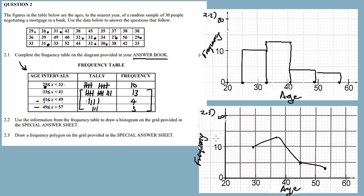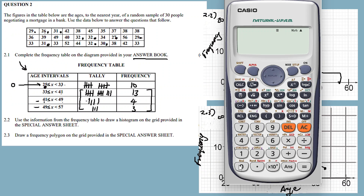For the frequency polygon, you need to extend it — it must stretch from the beginning all the way to the end. The age intervals start from 0 all the way up to 25, so you need to find the midpoint of that interval: 0 plus 25 divided by 2 equals 12.5.